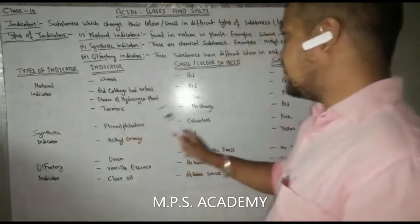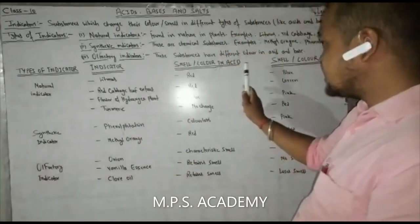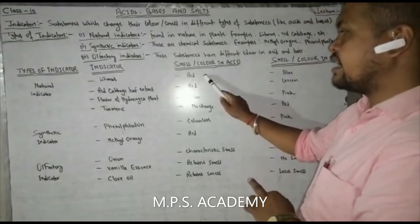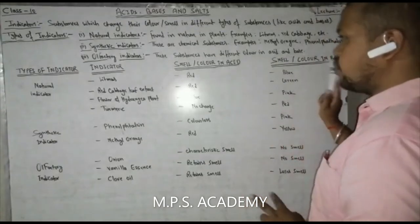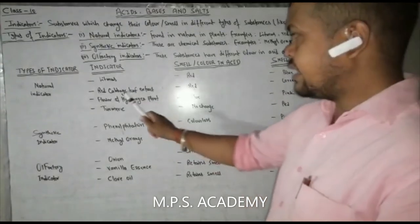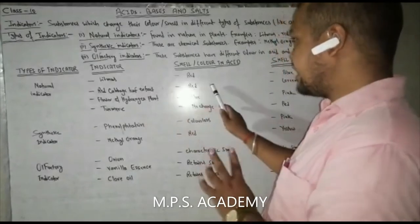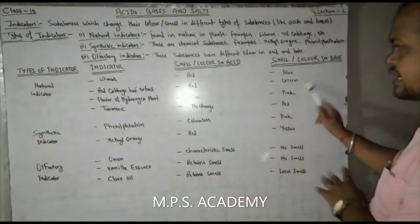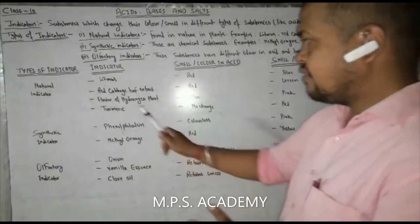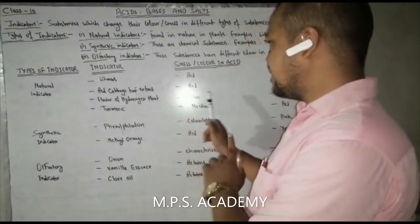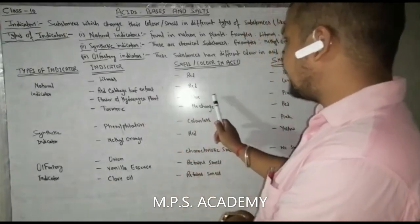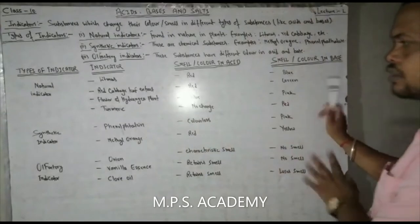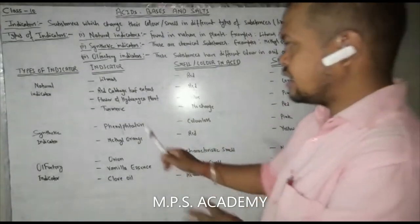Litmus changes color in acid and turns blue in basic solution. Red cabbage leaf extract turns red in acid and green in base. The flower of the hydrangea plant turns blue and pink in acid.